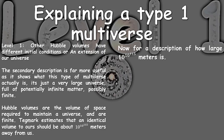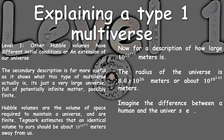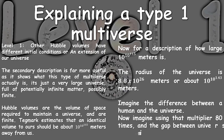For a description of how large 10 to the 10 to the 115 meters is: the radius of the observable universe is 8.8 times 10 to the 26 meters, or about 10 to the 10 to the 1.43 meters. So imagine the difference between a human and the universe — think about the multiplier difference. Now imagine using that multiplier 80 times, and the gap between each universe would still be bigger — a very large number, but still finite.